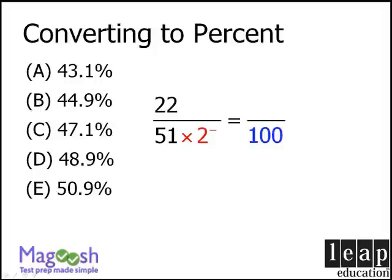This means we must multiply 22 by a number slightly less than 2 as well. When we do this, we get a number slightly less than 44, which equals a number slightly less than 44%.